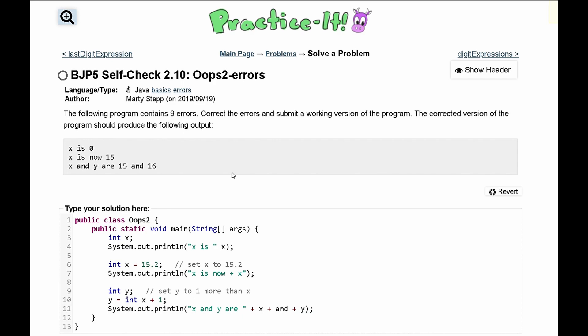For Practice It Self Check 2.10, we are given the following program here. However, it is incorrect and we need to submit a working version of the program. The corrected version of this program should produce the following output.